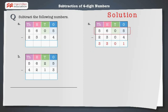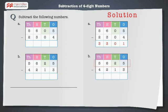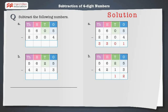5,605 minus 2,304 is equal to 3,301. Let's solve the next problem: 5,625 minus 4,213. Subtract the ones — 5 minus 3 is equal to 2. Next, subtract the tens — 2 minus 1 is equal to 1.